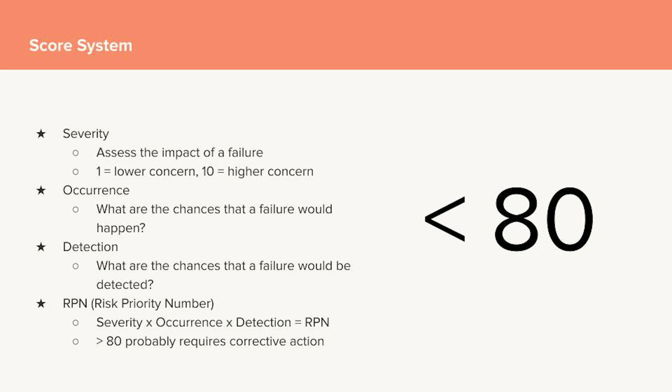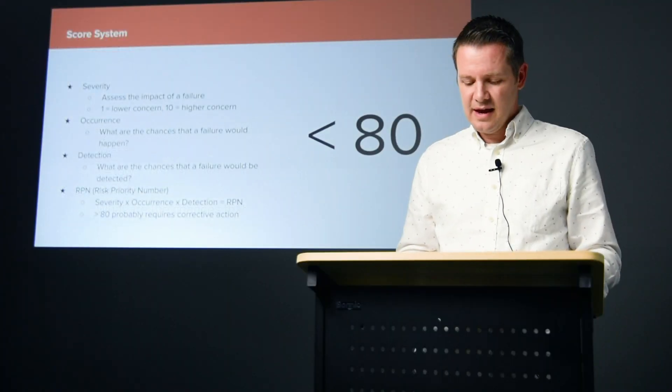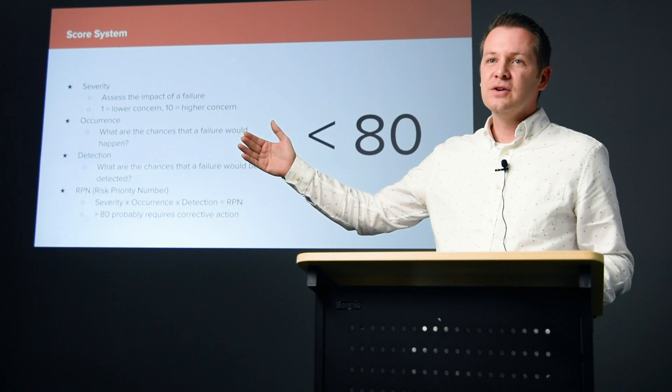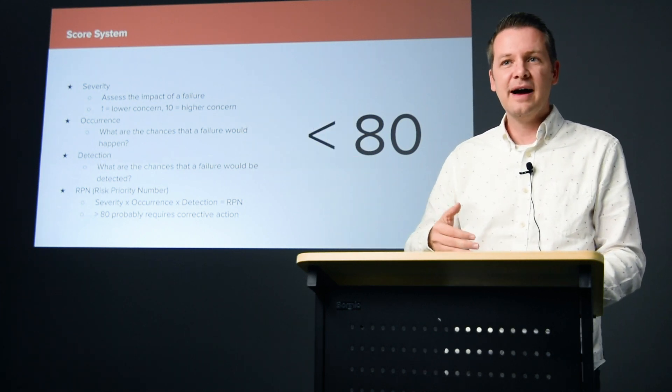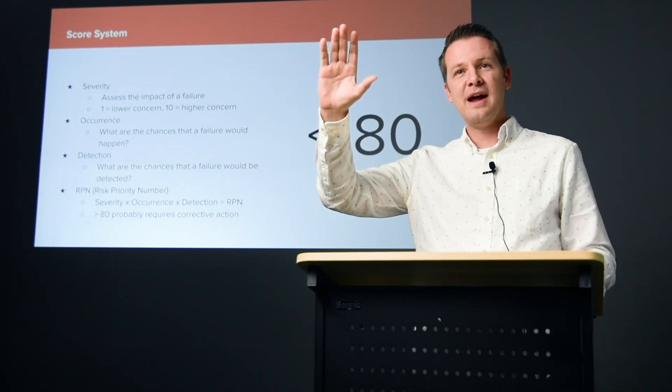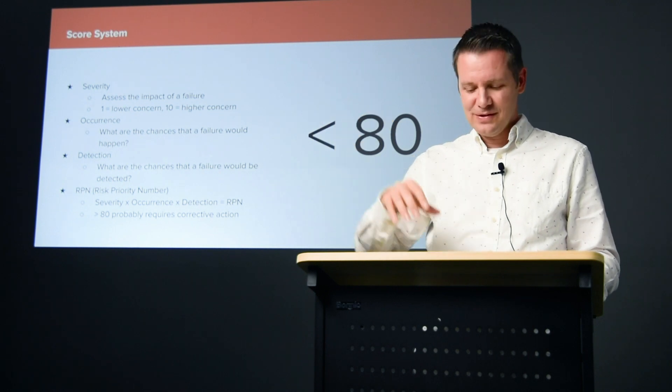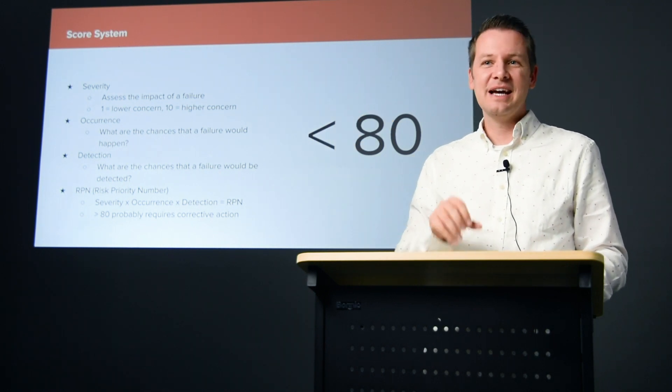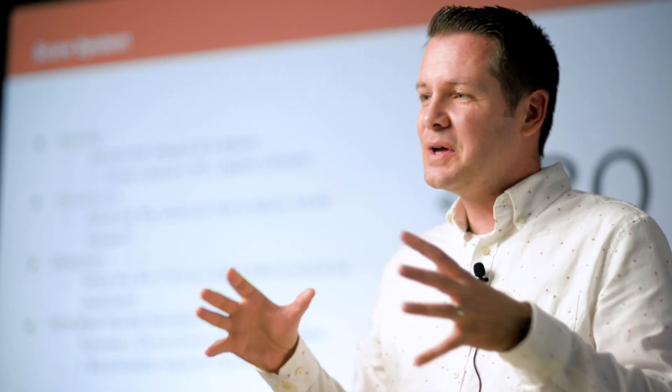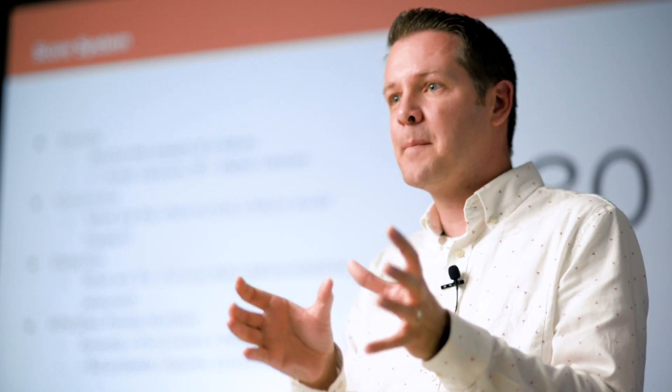That gives you a numerical value to assign to this particular process. A score over 80 should require corrective action. If it's over eight we take action, if the total's over 80 you take action. That's what the FMEA is designed to do—it helps us analyze something and see how we can make it better to hopefully avoid the problem altogether.